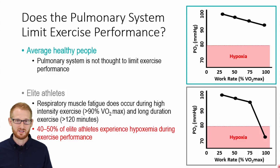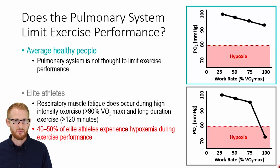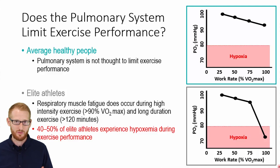Your lungs are actually overbuilt for what you're trying to do, since you're never going to become hypoxic as a normal individual. The cardiovascular system and the pulmonary system work well together to get oxygen around the body, but the cardiovascular system is the weak link, not the pulmonary system.